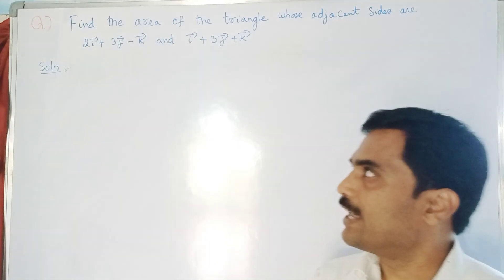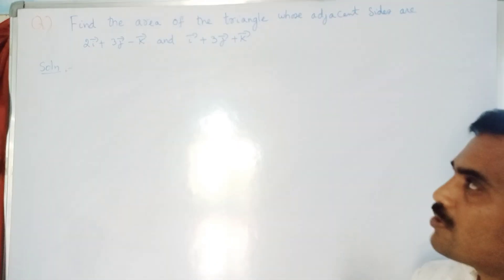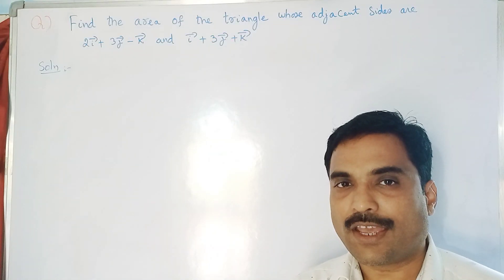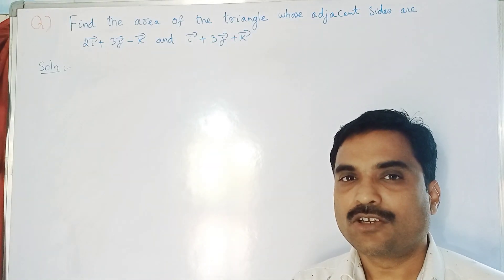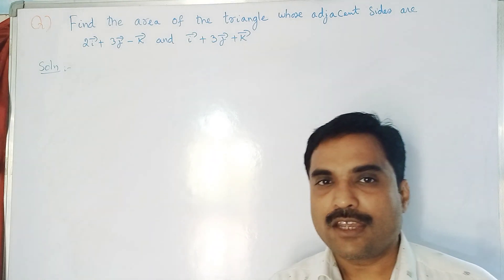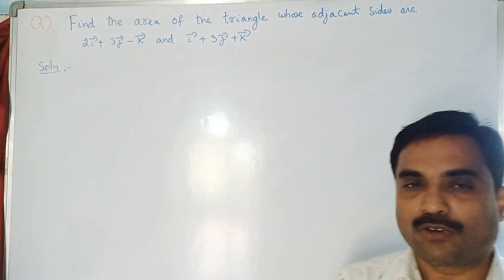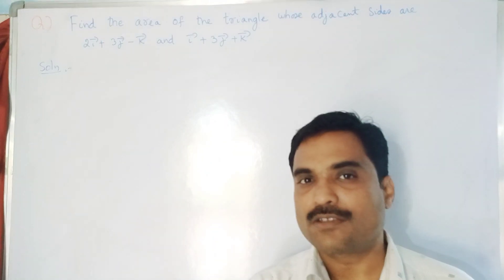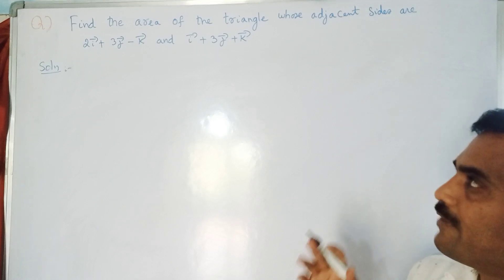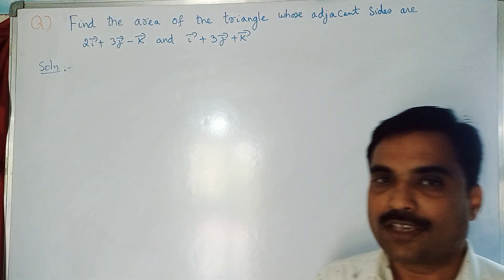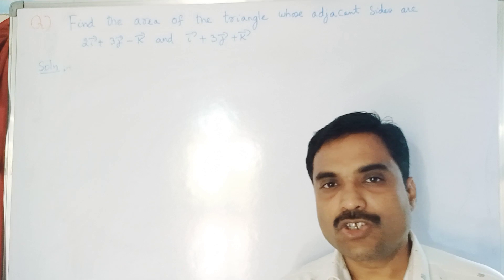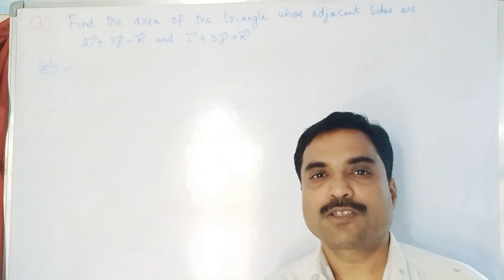Now, what you need to find is the area of the triangle. To solve this, you should remember the formula: area of triangle, when two vectors a and b are given, is equal to half into the modulus of a cross b. First you find the vector product of a and b, then take the magnitude, and then take half of that.